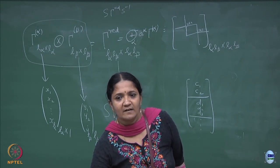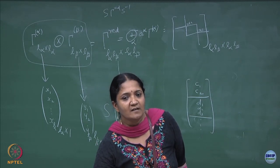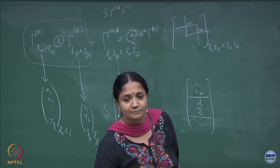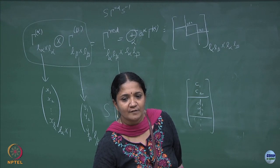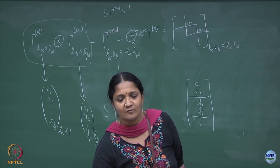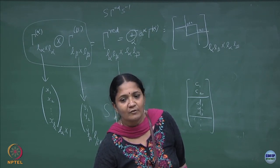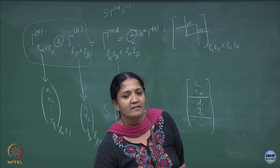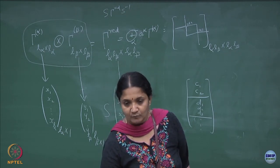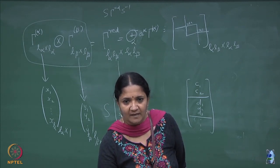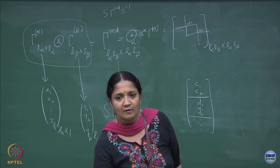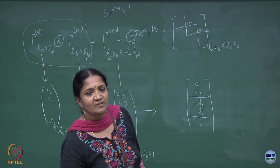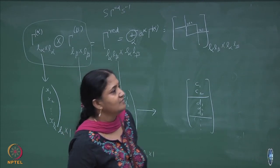Gamma_alpha tensor gamma_beta is a reducible representation, and the characters of a tensor product of two representations is simply the product of the characters — we verified this last time. Using the great orthogonality theorem, these identities will give you the multiplicity of an irrep gamma_alpha — how many times it occurs in the reducible representation.